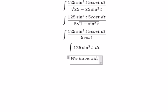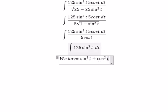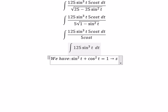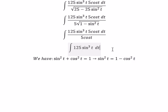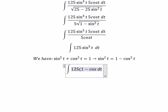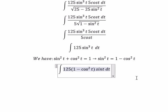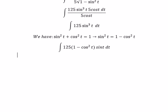We use the identity sin²(t) plus cos²(t) equals 1, so sin²(t) equals 1 minus cos²(t). We can substitute 1 minus cos²(t) here, multiplied by sin(t), so we can use integration by substitution.